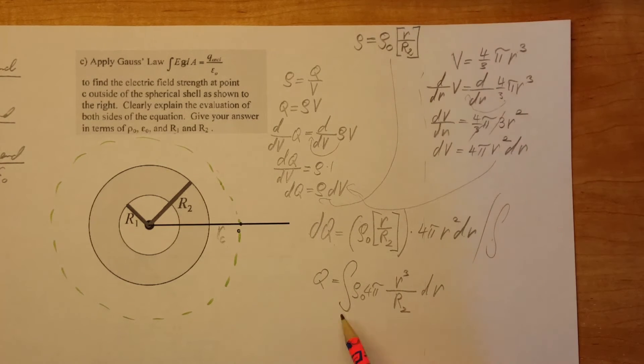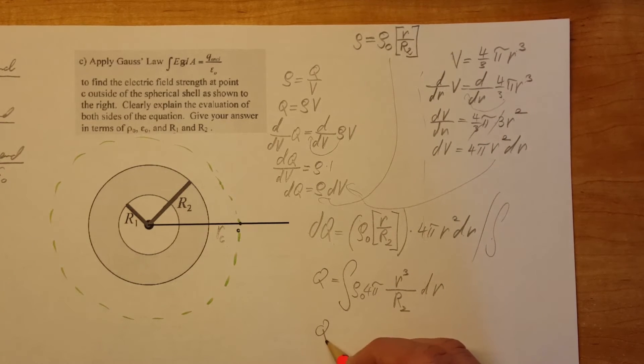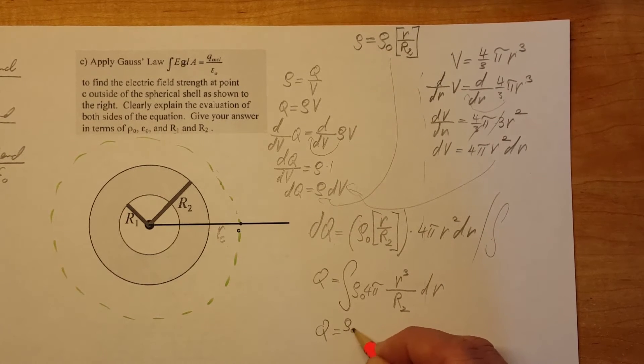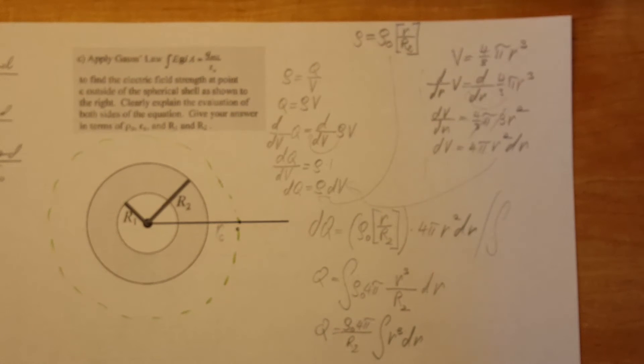Now let's look at what we have Rho 0, 4 pi and the big R2. These are all constants. So we're going to be able to move them in front of the integral. Rho 0, 4 pi over R2 integral. All we have left is inside is R cubed. Which will be a pretty easy integral. At first it might look very scary. But all this moves out and all we have is R cubed.